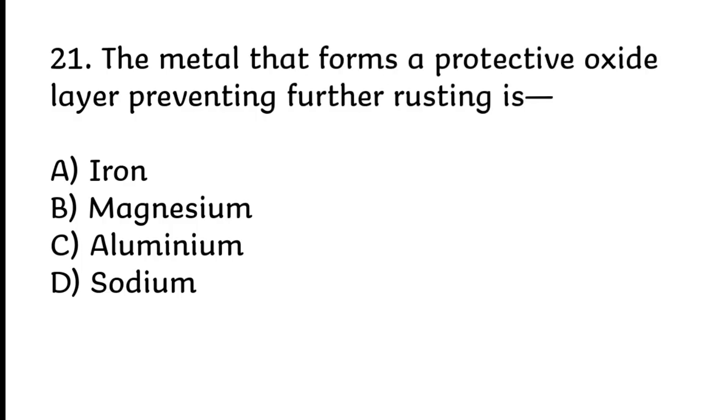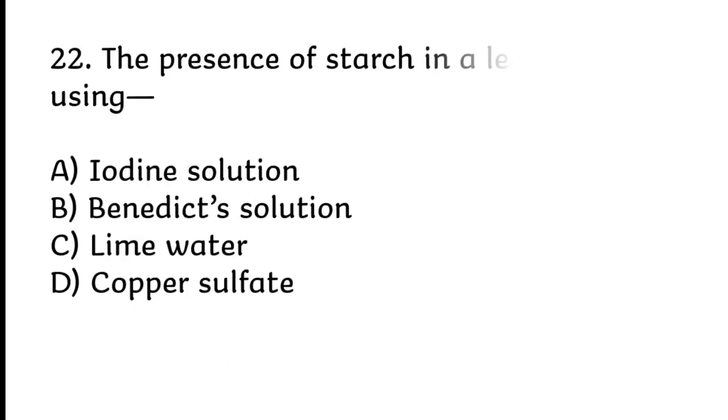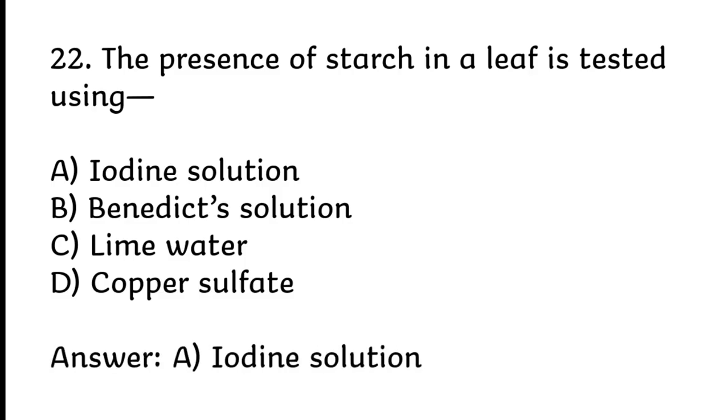The metal that forms a protective oxide layer preventing further rusting is aluminum. Correct answer is C, aluminum. The presence of starch in a leaf is tested using iodine solution. Correct answer is A, iodine solution.